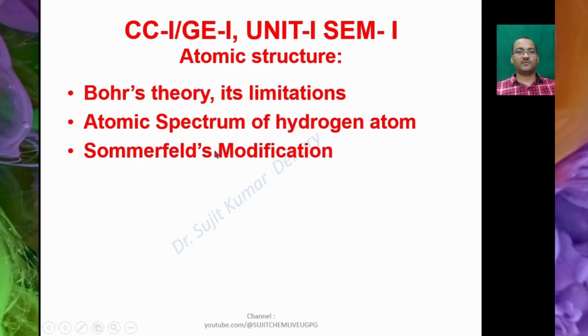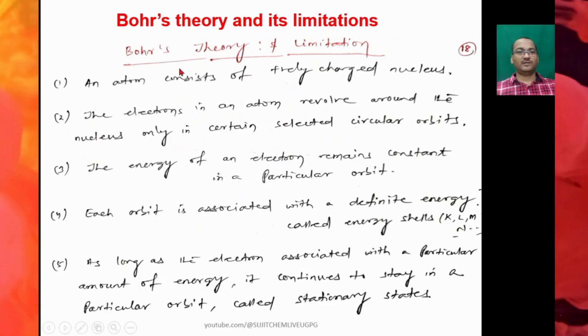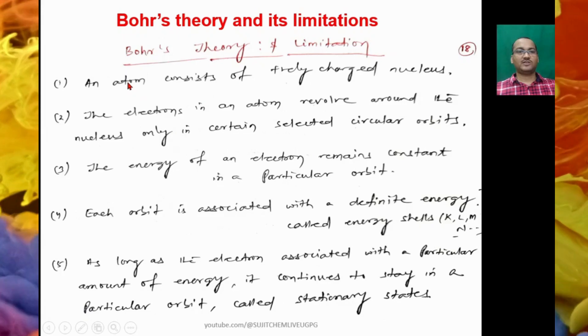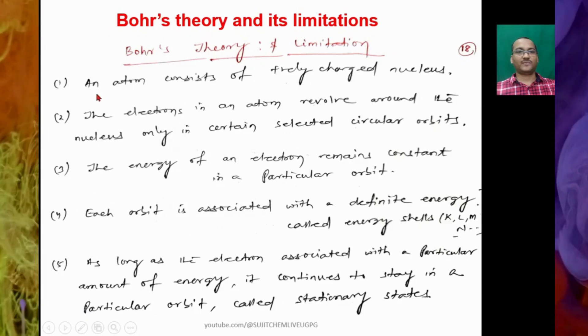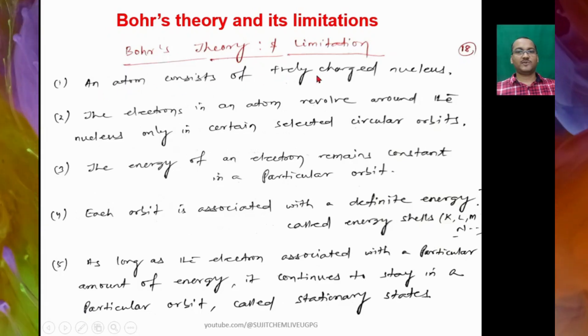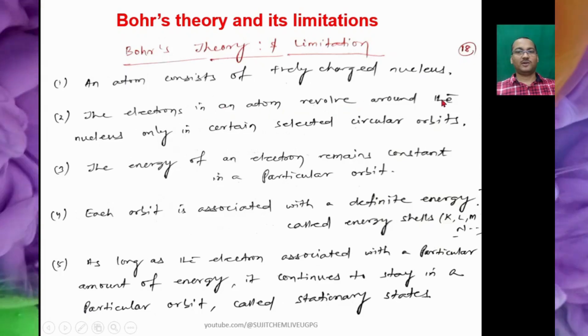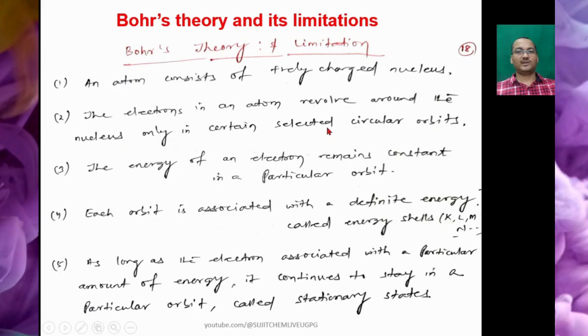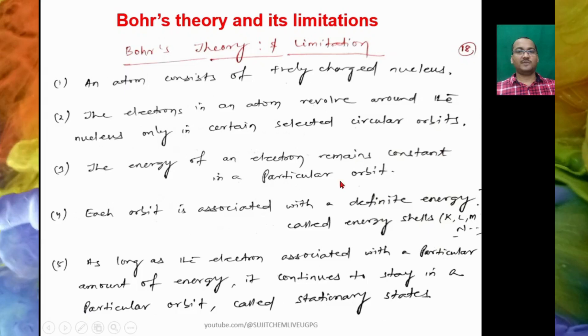So what is Bohr's theory? To explain the atomic structure, Bohr proposed a theory known as Bohr's theory. An atom consists of a positively charged nucleus and the electron in an atom revolves around the nucleus only in certain selected circular orbits. The energy of an electron remains constant in a particular orbit.